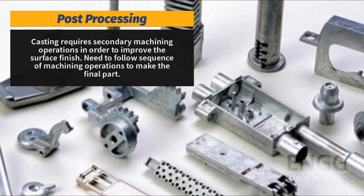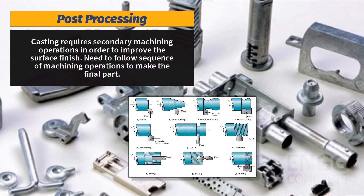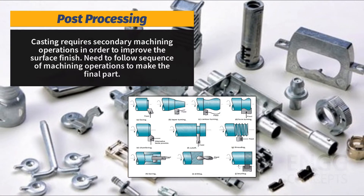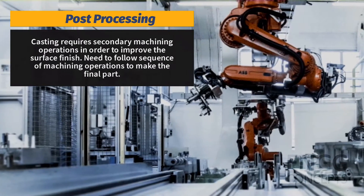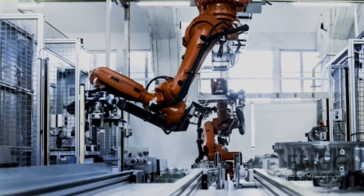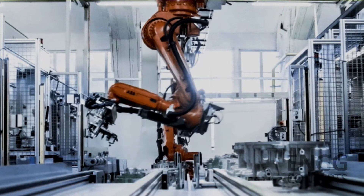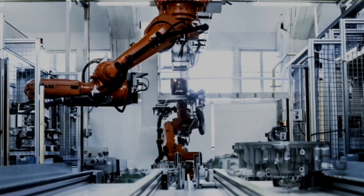Post processing is another disadvantage — just casting a part is not enough. It requires secondary machining operations to improve the surface finish, following a sequence of operations to make the final part. Modern casting processes can be automated to some extent, but automation is considered only when the production scale is medium to large.